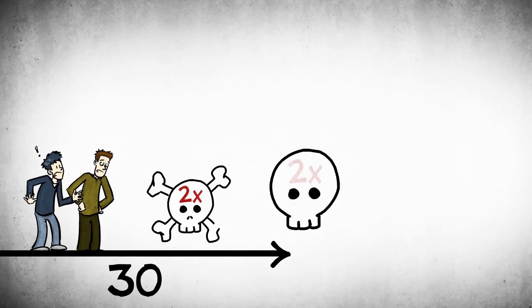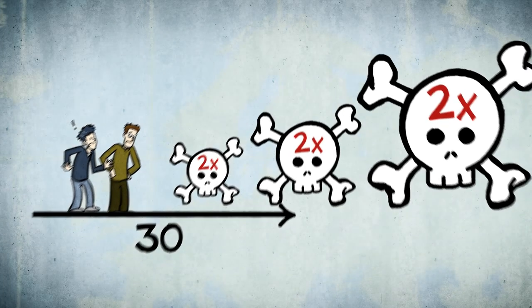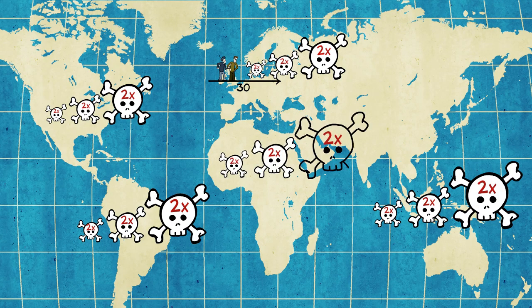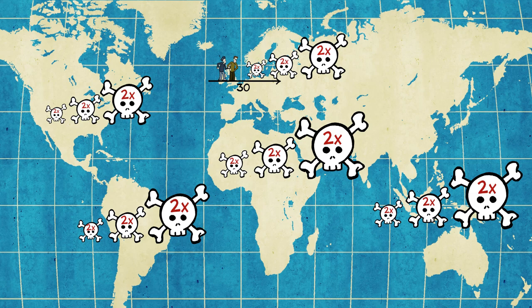After about age 30, your chances of dying double every eight years. This is fairly standard for human populations. No matter where you're from or where you live in a third world country, they may have higher mortality to begin with, but you still see this exponential increase in mortality.